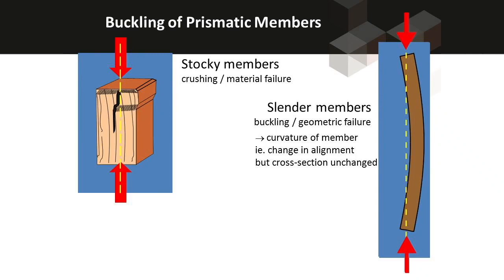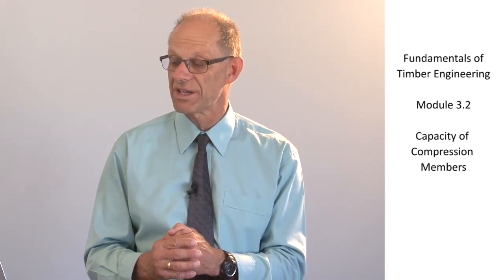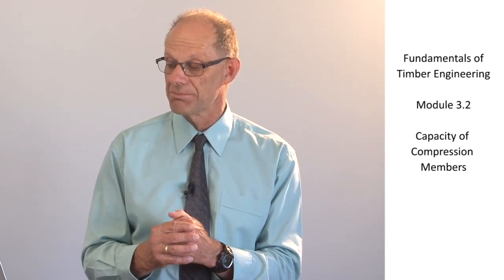The second mode of failure is more associated with slender members. As the load is applied, the two ends are moving closer together, but that is accompanied by a change of shape of the member. The yellow dotted line was the initial centre line, and now the member has moved away from that. That's a classic buckling failure, and that is the type of failure mode we tend to find with compression members.